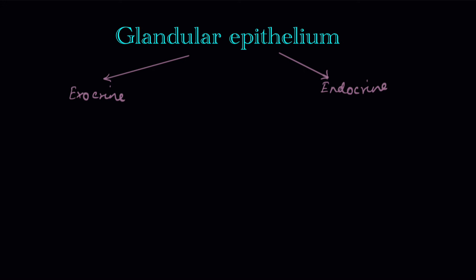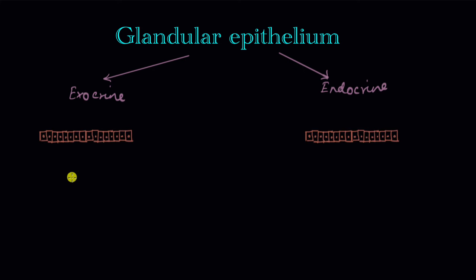Both exocrine glands and endocrine glands start out with a regular epithelium. In any epithelium there is a surface at the top, which can face the exterior like the skin, the digestive tract, the respiratory tract, or the excretory tubules in the kidneys. The epithelium always has a surface and it also has a basal part.